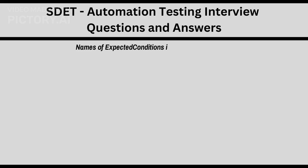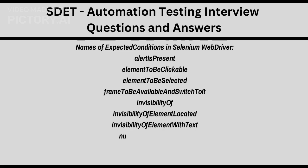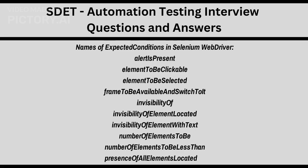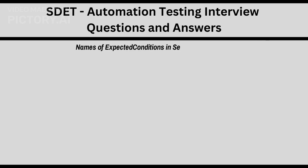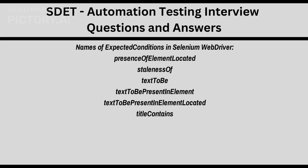Names of ExpectedConditions in Selenium WebDriver include: presenceOfElementLocated, stalenessOf, textToBePresentInElementLocated, titleContains, titleIs, visibilityOf, visibilityOfAllElements, and visibilityOfAllElementsLocated.